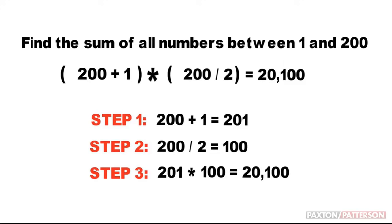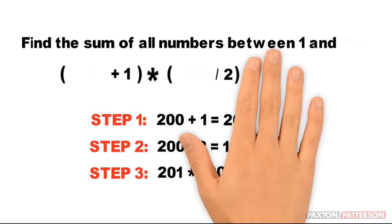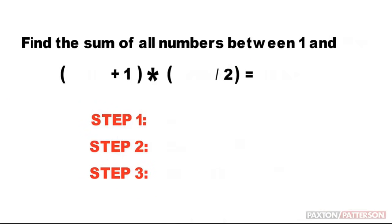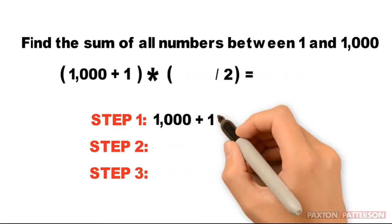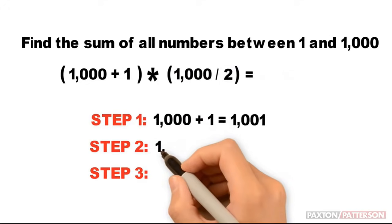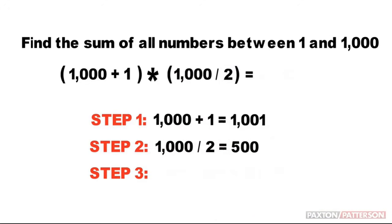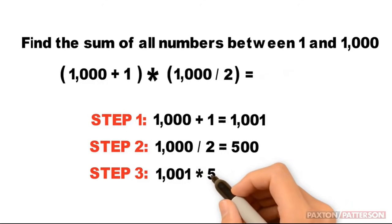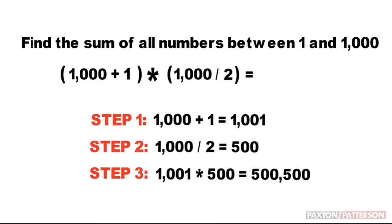This algorithm can be used to find the sum of all numbers between 1 and any number. Let's see how it works with 1,000. Erase the 200s. Now find the sum of all numbers between 1 and 1,000: 1,000 plus 1; 1,000 divided by 2; multiply them together, and we end up with 500,500.